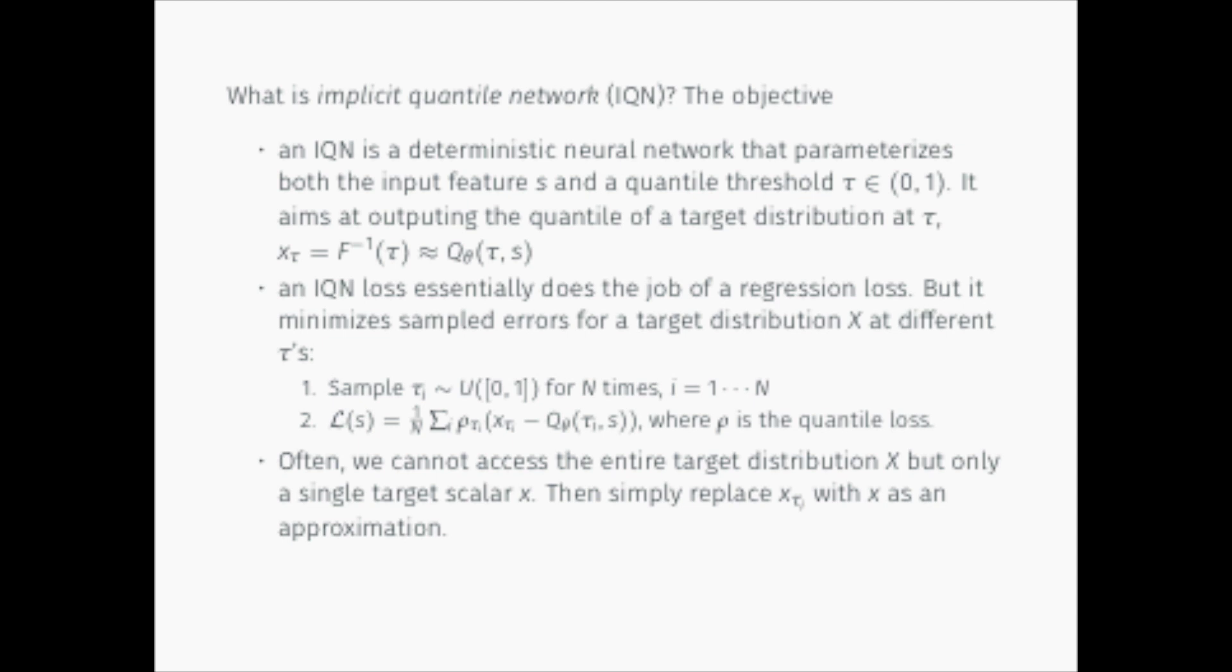More often than not, we cannot access the entire target distribution X, but only have in hand a single target scalar. In these cases, we can only utilize what we know and replace the target quantiles with X as an approximation. I also try to imagine that the target distribution has a delta pdf, where all the mass is centered on the single value X.